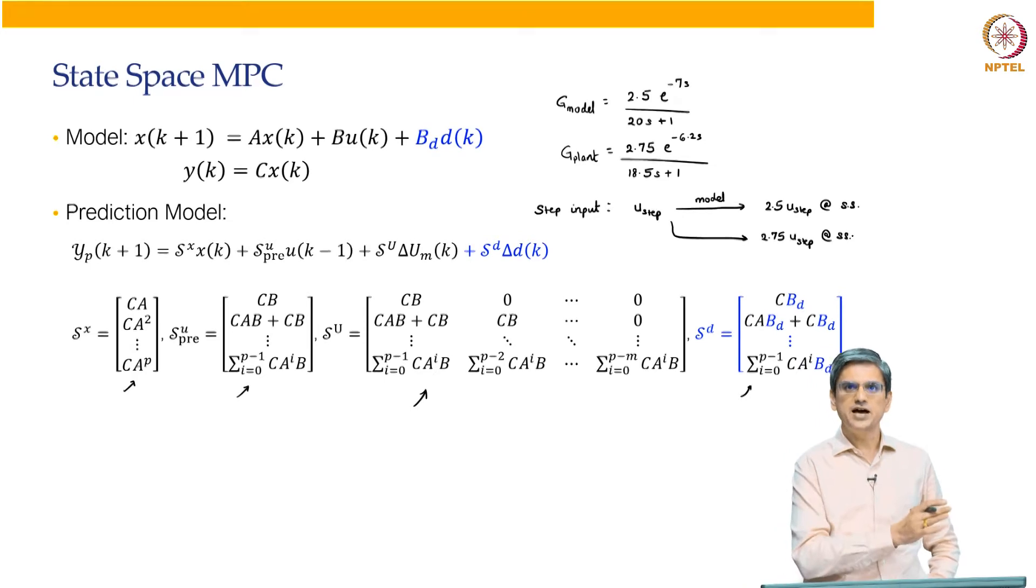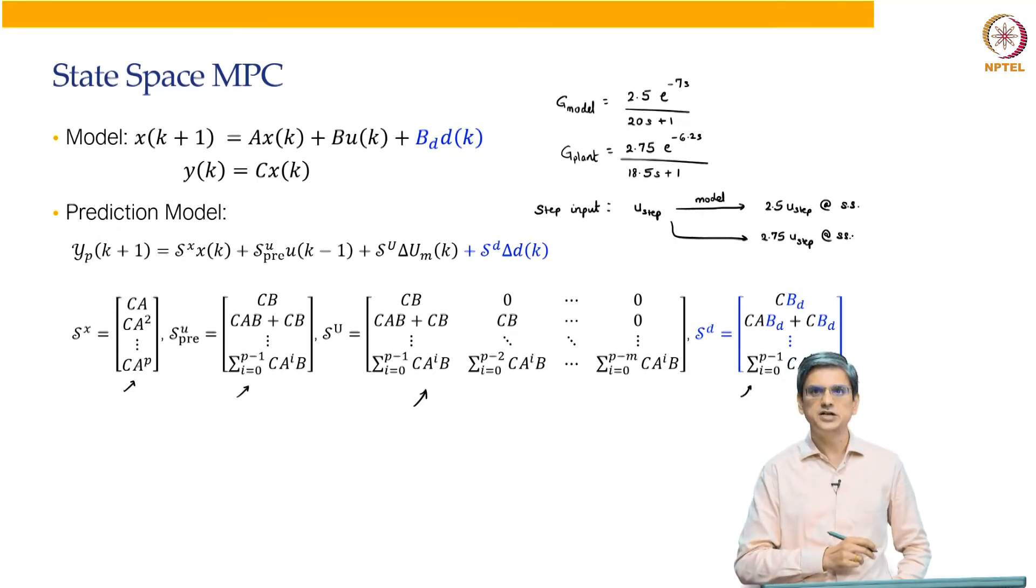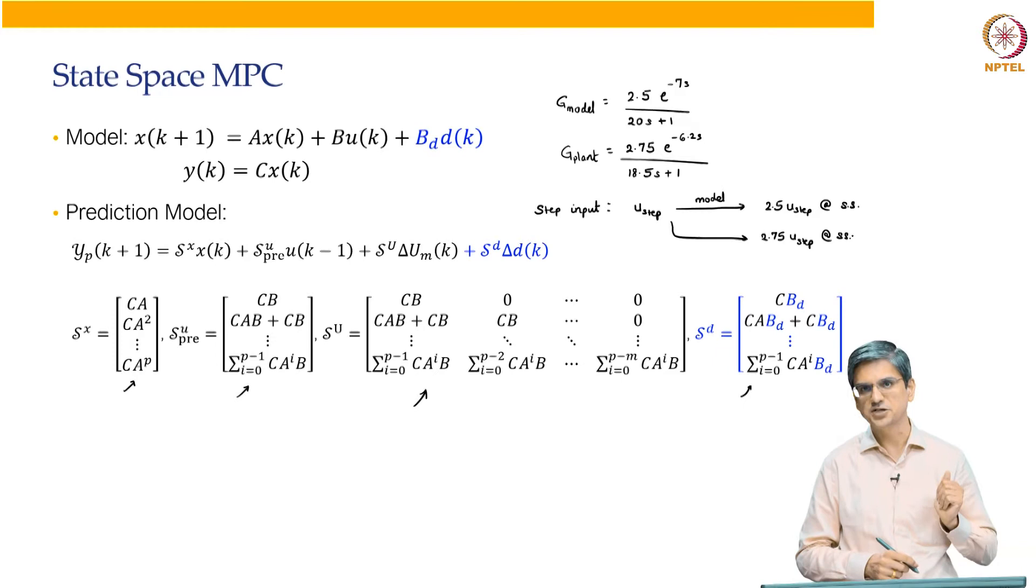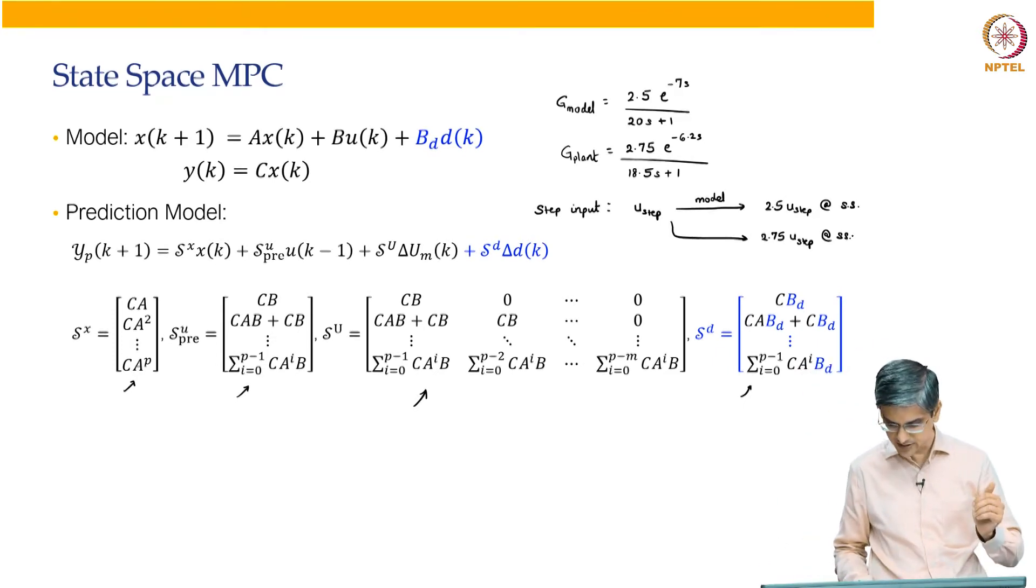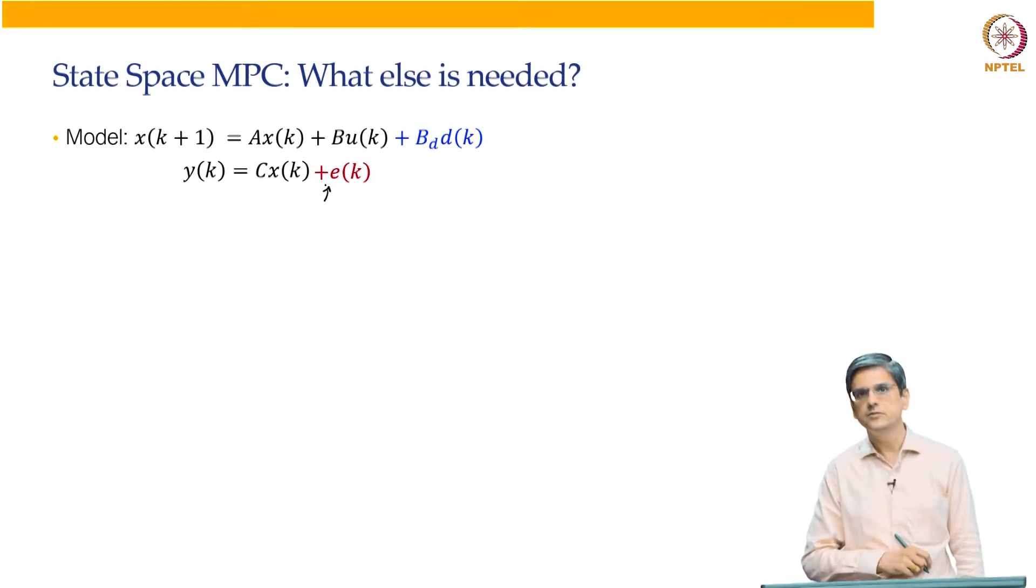In order to avoid having this offset, we need to ensure that there is an inbuilt integrator into the overall system. How do we ensure that there is an inbuilt integrator? One is we realize that the model and the plant there is a mismatch. When there is a mismatch in the model and the plant, we add the error e. How did we handle that particular error earlier by adding e over here.